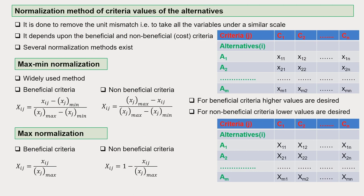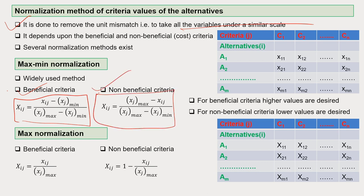Normalization of criteria values of the alternatives is done to remove mismatch, so that all variables come under a similar scale. Normalization also depends upon whether criteria are beneficial or non-beneficial. For beneficial criteria, higher values are desired; for non-beneficial criteria, lower values are desired. In maximum-minimum normalization, for beneficial criteria one formula is used, and for non-beneficial criteria a different formula is used.